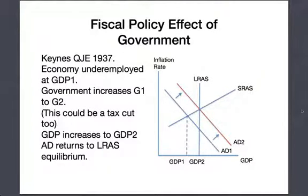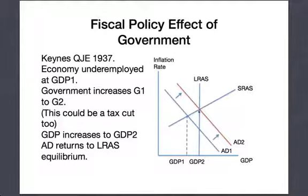Keynes, in the Quarterly Journal of Economics in 1937, essentially responding to a book review by Jacob Viner, restated his thesis — the general theory of employment. His idea was quite simple: imagine the economy is underemployed at some level GDP_1. Using the AS-AD model, the government increases its expenditure from G1 to G2, basically starts spending money — or it could be a tax cut — and that pushes GDP out to GDP_2. Aggregate demand returns to its long-run aggregate supply. This notion that fiscal policy, either through increased spending or decreased taxes, can have some effect on the real economy is built into the modern policymaker's toolkit.